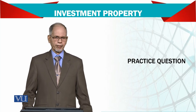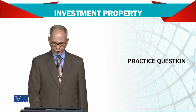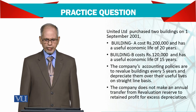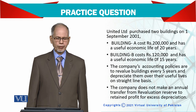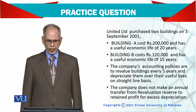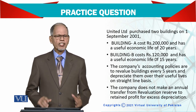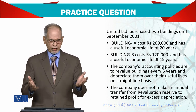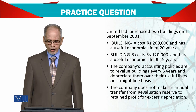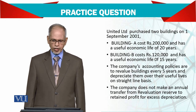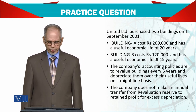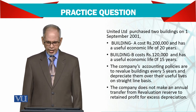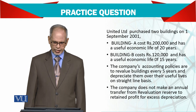Investment property — another practical question. United Limited purchased two buildings on 1st September 2001. Building A cost 200,000 and has a useful life of 20 years. Building B is 120,000 and has a useful life of 15 years. These figures are basically in millions but reduced here to keep it simpler.